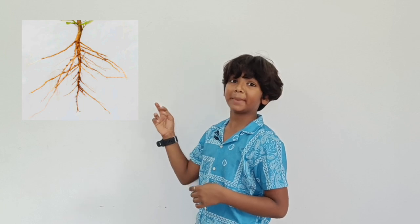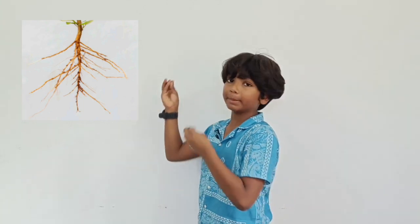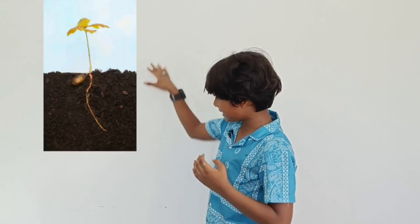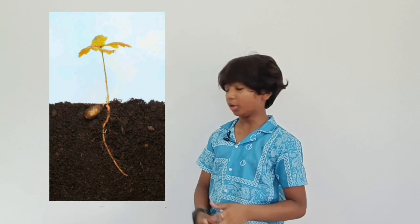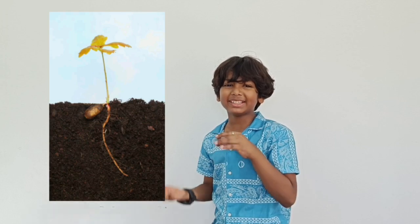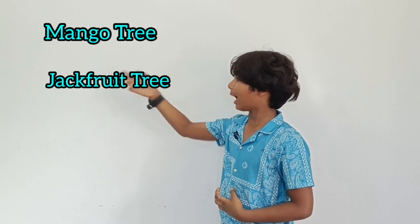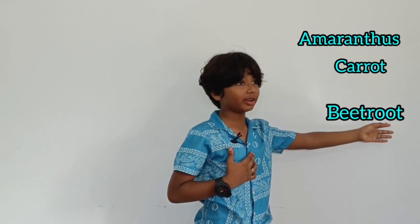Let's take the tap root system. There is a main single thick root that grows from the base of the stem and grows deep into the soil, and branches grow from that single thick root — that is the tap root. Under the tap root system, the thick root grows deep into the soil, so it is difficult to uproot. Here are some examples of plants which have tap root: mango tree, jackfruit tree, amaranthus, carrot, beetroot, and bimja.